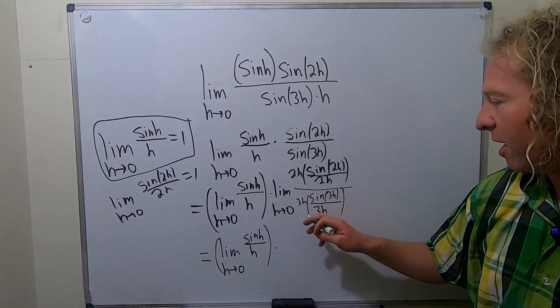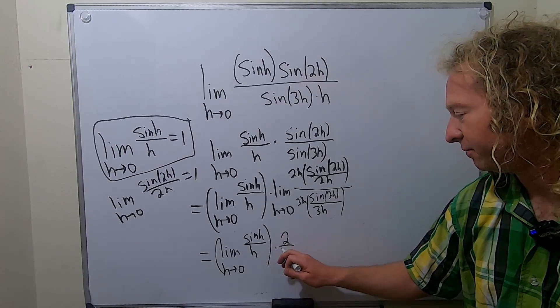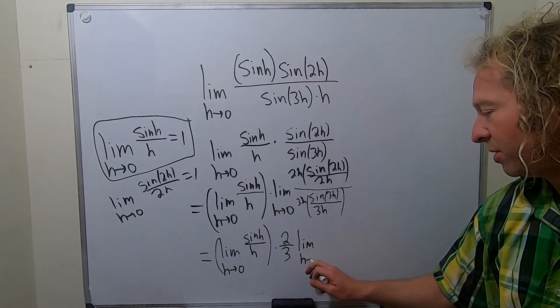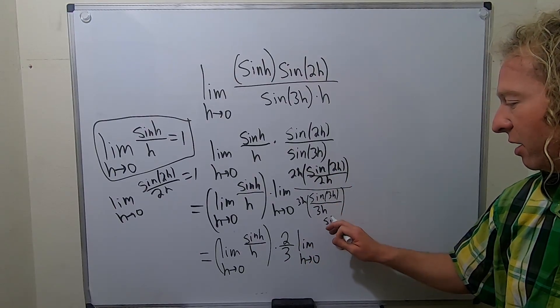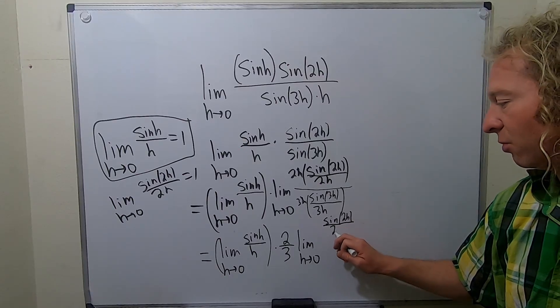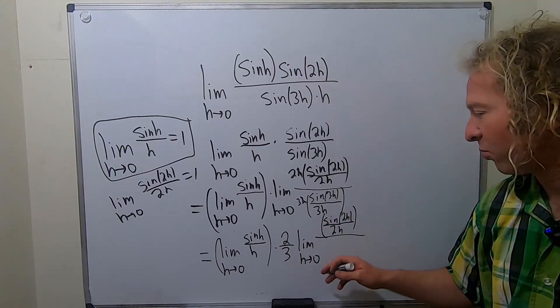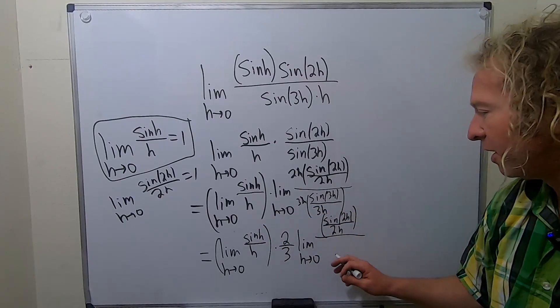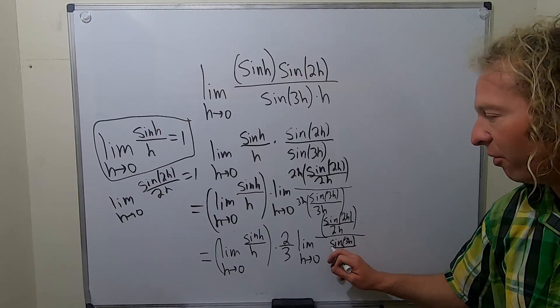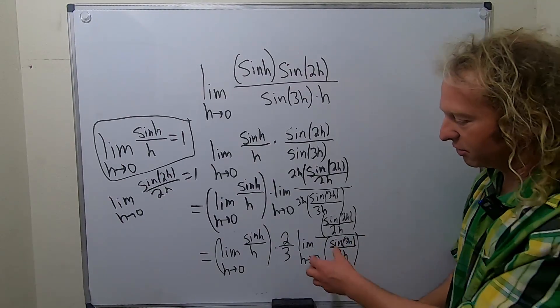Times, and then these h's cancel. You can pull out the 2/3. So it's 2/3, limit, h approaches 0. And it's the top piece. So sine 2h over 2h. I'm going to go really slow here. Over, you can bring the limit upstairs and the limit downstairs as well. You can break it up into like three different limits. This is the sine of 3h. It's very notationally intensive. Over 3h.